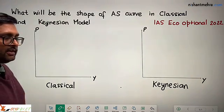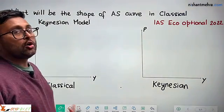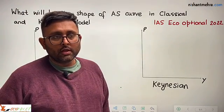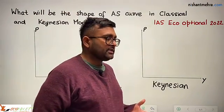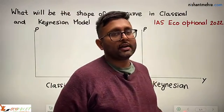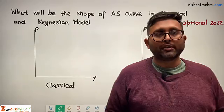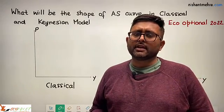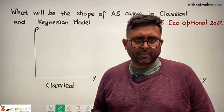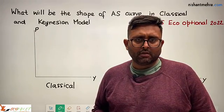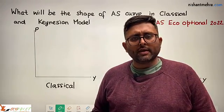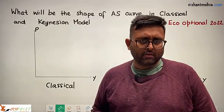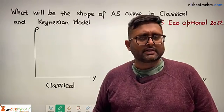The classical model is a long-run model. Here, the assumption is that all factors are fully employed and the labour market is in full equilibrium. So, all labour which is there is fully employed in the classical model.